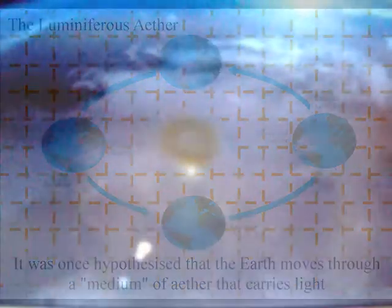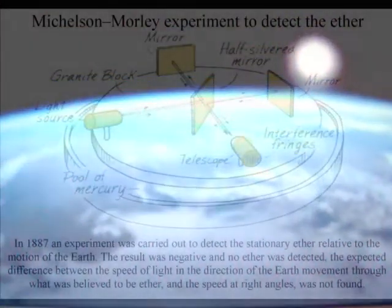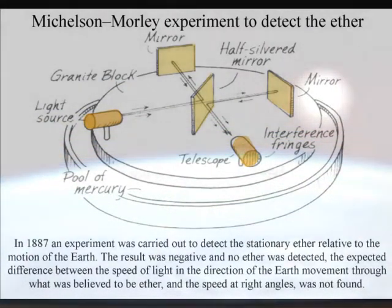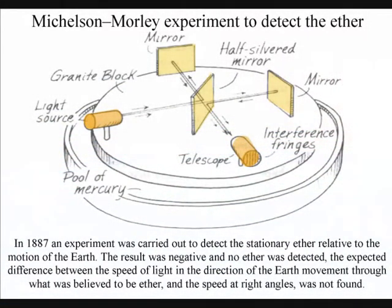Because light can travel through a vacuum, it was believed that even the vacuum of space must be filled with this ether. In 1887, an experiment was carried out to detect this stationary ether relative to the motion of the earth. The result was negative; no ether was detected.